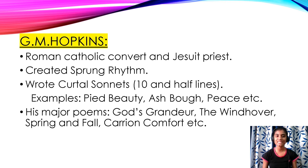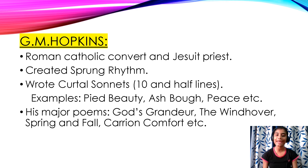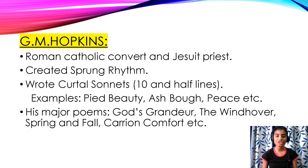The next poet is G.M. Hopkins. He was a Roman Catholic convert and a Jesuit priest. He created sprung rhythm — please remember this. He also wrote curtal sonnets. A curtal sonnet is a sonnet which has ten and a half lines. Examples of the curtal sonnets he wrote are Pied Beauty, Ash Bough, and Peace. His major poems are God's Grandeur, The Windhover, Spring and Fall, and Carrion Comfort.